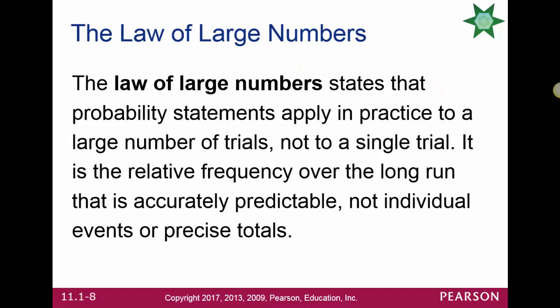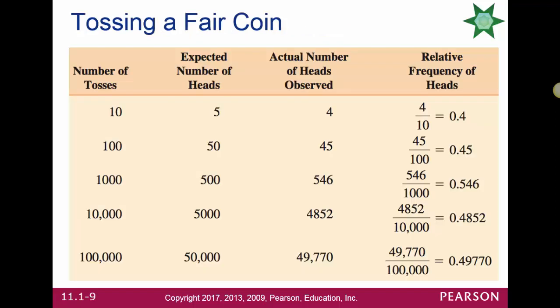The law of large numbers states that probability statements apply in practice to a large number of trials, not to a single trial. It's the relative frequency over the long run that is accurately predictable, not an individual result. For example, if we toss a coin only 10 times, we may only see four heads. But the more times we toss it, the expected number of heads gets closer and closer to the theoretical probability of 0.5.